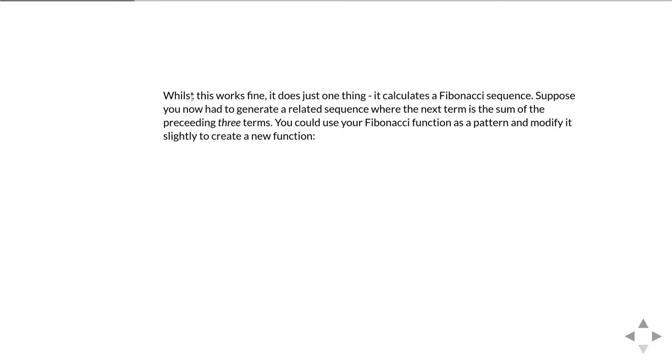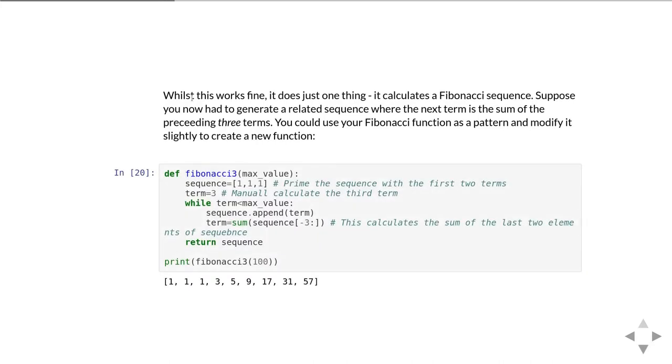This all works just fine and it's great for calculating Fibonacci sequences. But suppose instead you needed to generate a related sequence where instead of being the sum of two terms it's the sum of the preceding three terms. You could use your Fibonacci function as a pattern and just modify it slightly to create a new function.